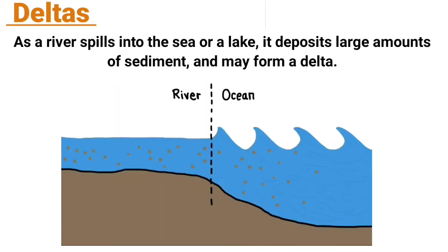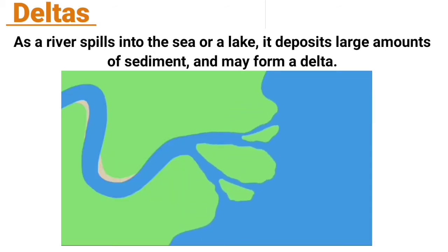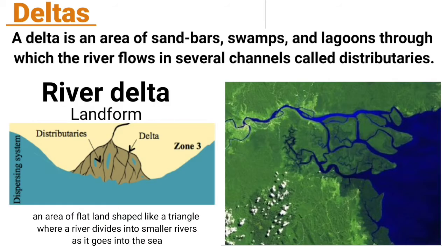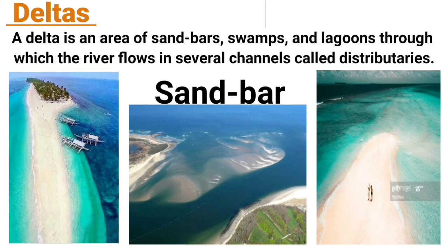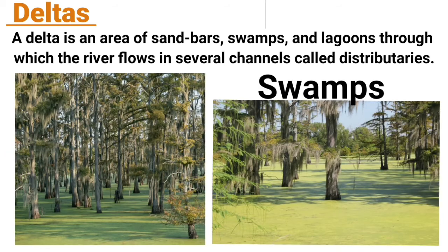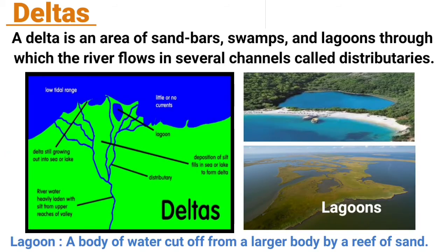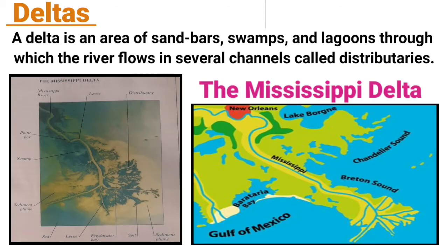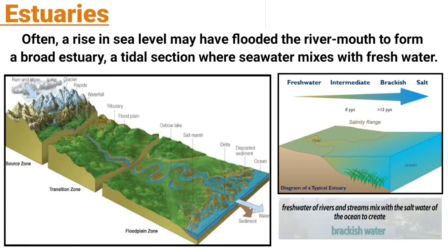A river deposits large amounts of sediment and may form a delta. A delta is an area of sandbars, swamps, and lagoons through which the river flows in several channels called distributaries. The Mississippi Delta is one such example.